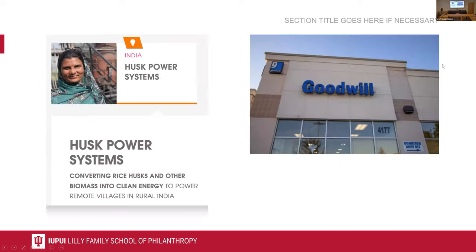I'll give you several examples of social enterprises. The first is Husk Power Systems, a for-profit organization which converts rice husks to provide power to villagers in India. Its social motivation is to provide services to disadvantaged populations. Another example most of us know is Goodwill — a non-profit organization that also adopts commercial activities to generate income. These are good examples of hybrid organizations combining financial and social motivations.